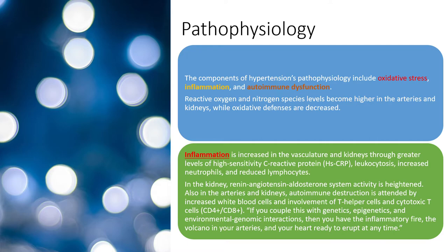Further pathophysiology includes oxidative stress, inflammation, immune dysfunction, and reactive oxygen/nitrogen species levels increasing in the arteries and kidneys when oxidative defenses are decreased. We want to reduce free radicals with antioxidants and phytonutrients. Chronic inflammation — not acute — increases vascular and kidney stress through C-reactive protein, leukocytosis, neutrophils, and reduced lymphocytes.